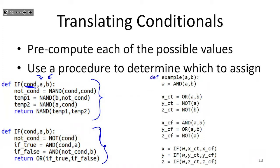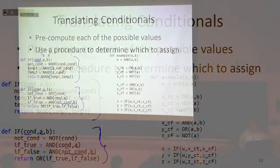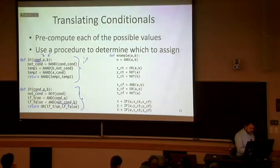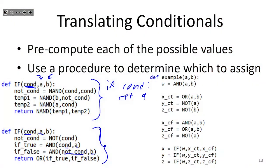Let's look at the situations where this if returns true. We want to return true whenever the condition was true and a was true — that's one situation. Another situation where we'd return true is if the condition was false, that is not-condition was true, and b was true. Those are the only two ways we could return true with this if.